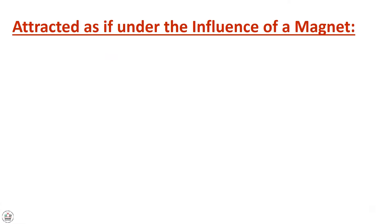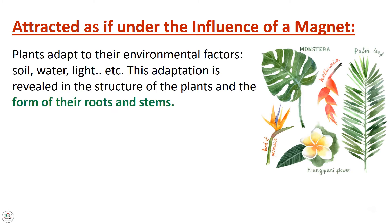Referring to the engage and explore section, we discussed that the respiration process occurs in living organisms by taking oxygen and releasing carbon dioxide. Also, light and water are two important factors for plants in order to grow well. So, how do plants adapt to these factors? Let's see.